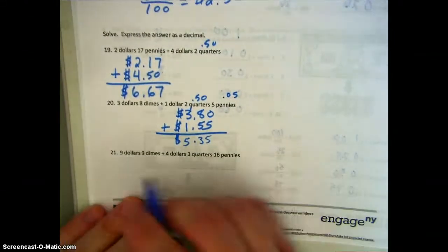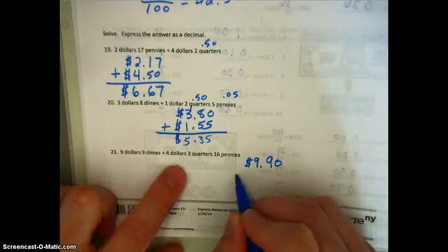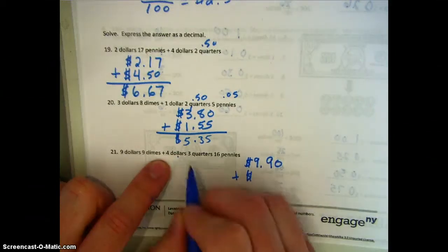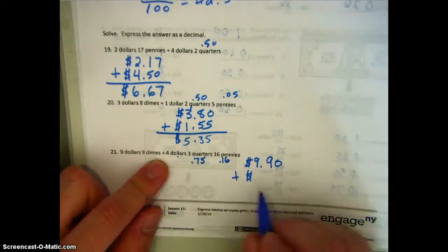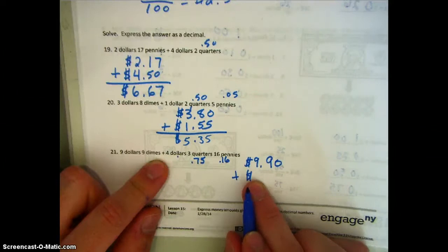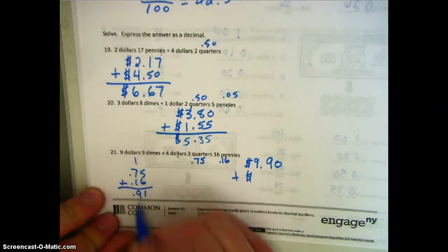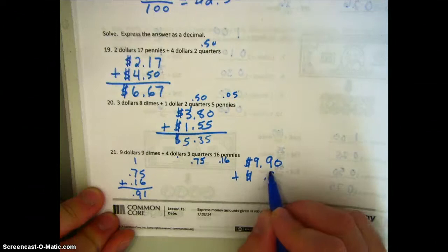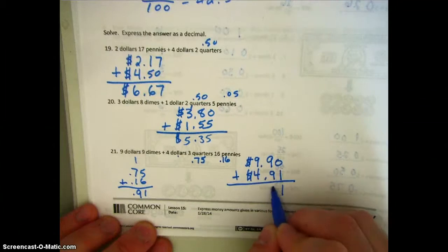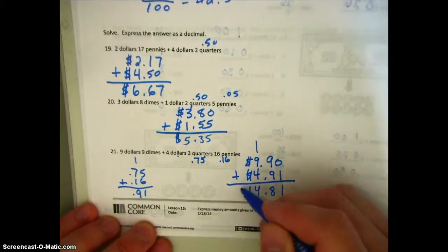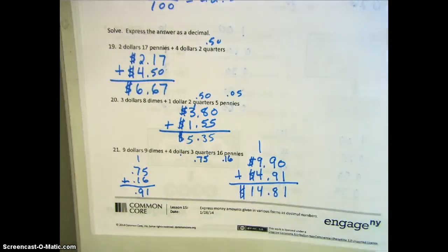Moving on to our last one — we have nine dollars and nine dimes. We're adding four dollars, but we also have three quarters for seventy-five cents and sixteen pennies for sixteen cents. Before writing the number in our number sentence, I need to first add up the cents. Between the quarters and the pennies, I have ninety-one cents, so my second number is four dollars and ninety-one cents. Adding these up, we have fourteen dollars and eighty-one cents. Today should be some pretty quick review — go ahead and take a look at that exit ticket.